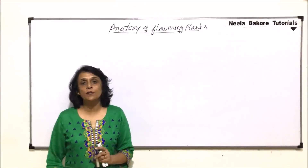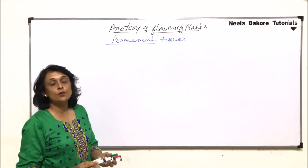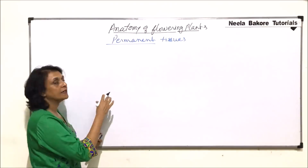In this video, we will start with the permanent tissues. In permanent tissues, the power of division is lost except for parenchyma cells. We will first see which types of permanent cells are there and then we will come to the various differences amongst them.